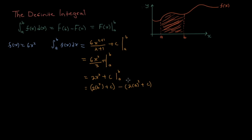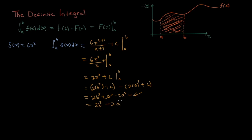If we simplify and open up the brackets we get 2B cubed plus C minus 2A cubed minus C. As you can see, you have a positive C and a negative C, and they cancel out. So we're left with 2B cubed minus 2A cubed. That will work for every definite integral — the C will always cancel out.